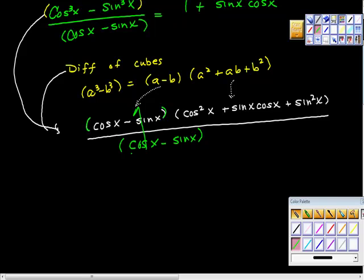So this whole thing is one, which leaves us with cosine squared x plus—if you don't mind, I'm going to move this piece—plus sine squared x plus sine x cosine x.